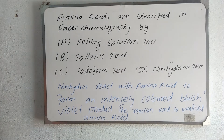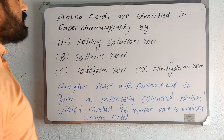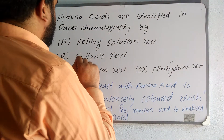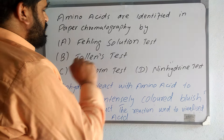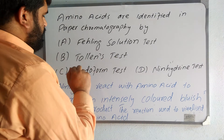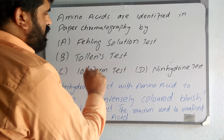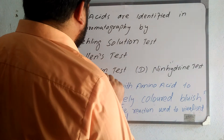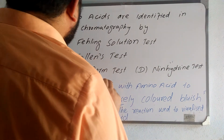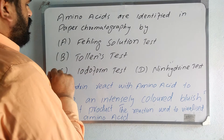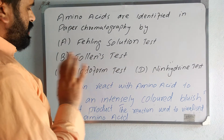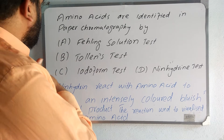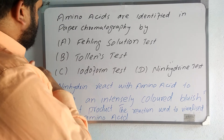Next MCQ is that: amino acids are identified in paper chromatography by — option A, Fehling solution test; option B, Tollens test; option C, Biuret test; or option D, ninhydrin test. Fehling solution and Tollens test are not used for identifying amino acids.